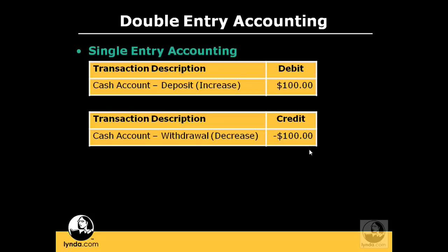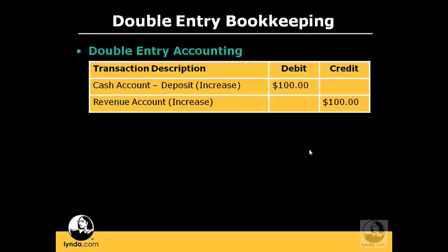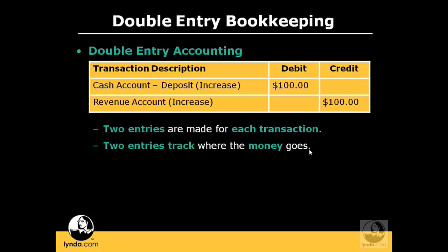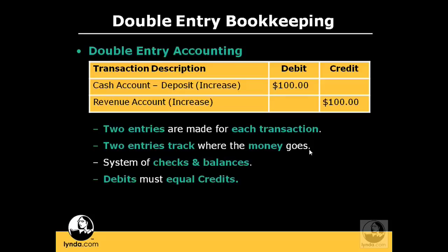In double entry accounting, there are two entries made to the transaction instead of one. Unlike single entry accounting, double entry accounting shows us not only where the money is going but also where it came from. Double entry accounting provides a system of checks and balances by summing all of the debits and summing all of the credits and comparing the totals. If the two totals do not equal, you are out of balance, which means you've made a mistake. This ties back to the balance sheet and what keeps it in balance.